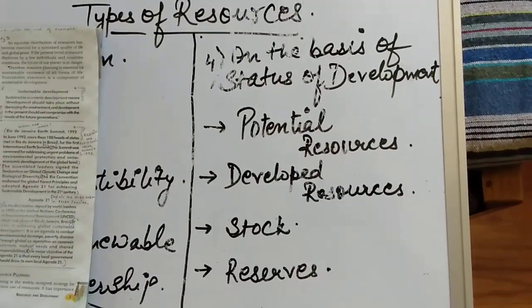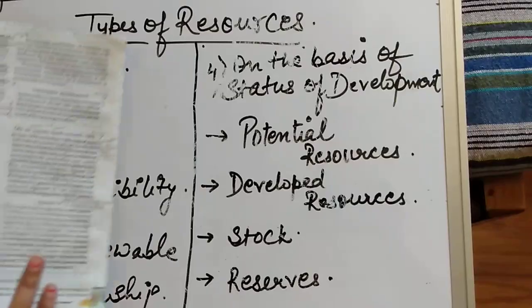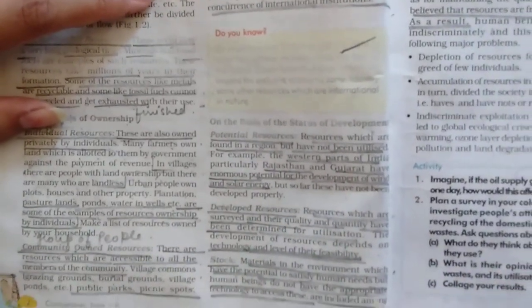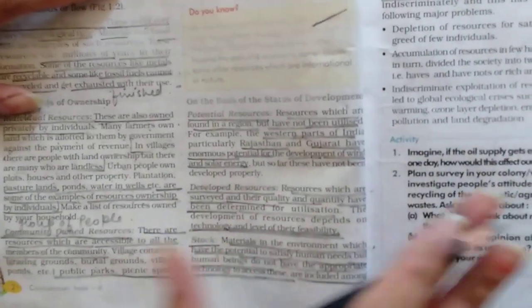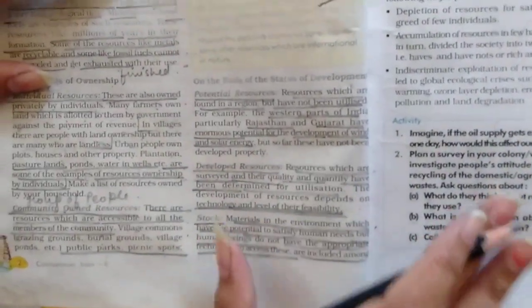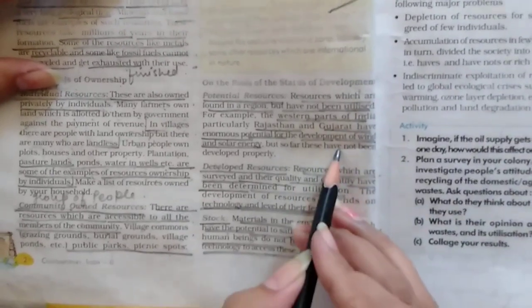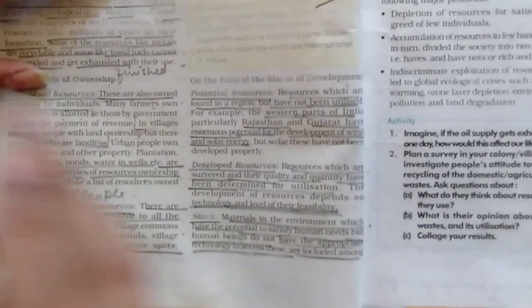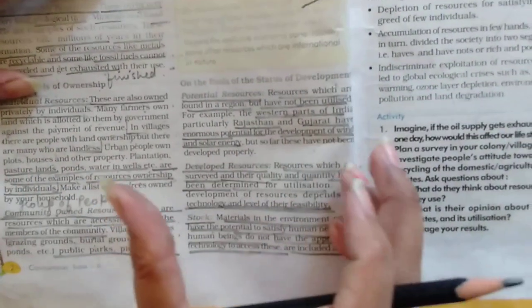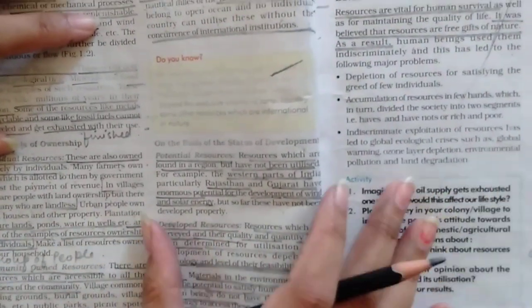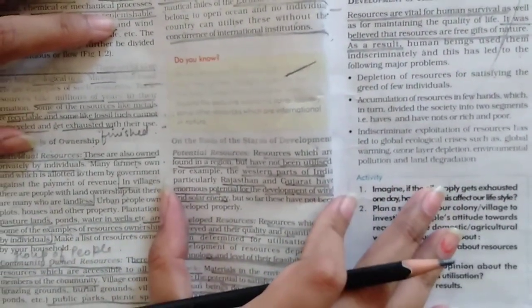For example, if we talk about our western part of Gujarat or Rajasthan in our country, we have a lot of wind and solar energy. We are using some portion of that energy but not completely. We have a potential to use that particular energy in more number.